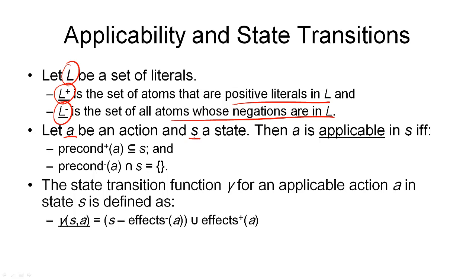Let A be an action and S be a state. When I say action here, I mean a ground instance of an operator. The action A is applicable in the state S if two conditions hold: all the positive preconditions of A — preconditions-plus of A — must be a subset of the state S, and none of the negative preconditions of A can be in S. The intersection of the negative preconditions and what is in S must be empty. In other words, A is applicable in S if all positive preconditions hold in S and none of the negative preconditions hold in S.